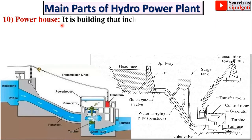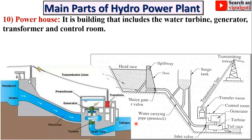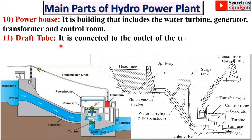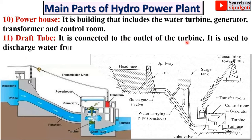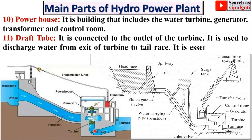Next: powerhouse. This portion is known as the powerhouse. It is a building that includes the water turbine, generator, transformer, and control room. Next: draft tube. It is connected to the outlet of the turbine. Here you can see this one is the draft tube, connected to the outlet of the turbine.